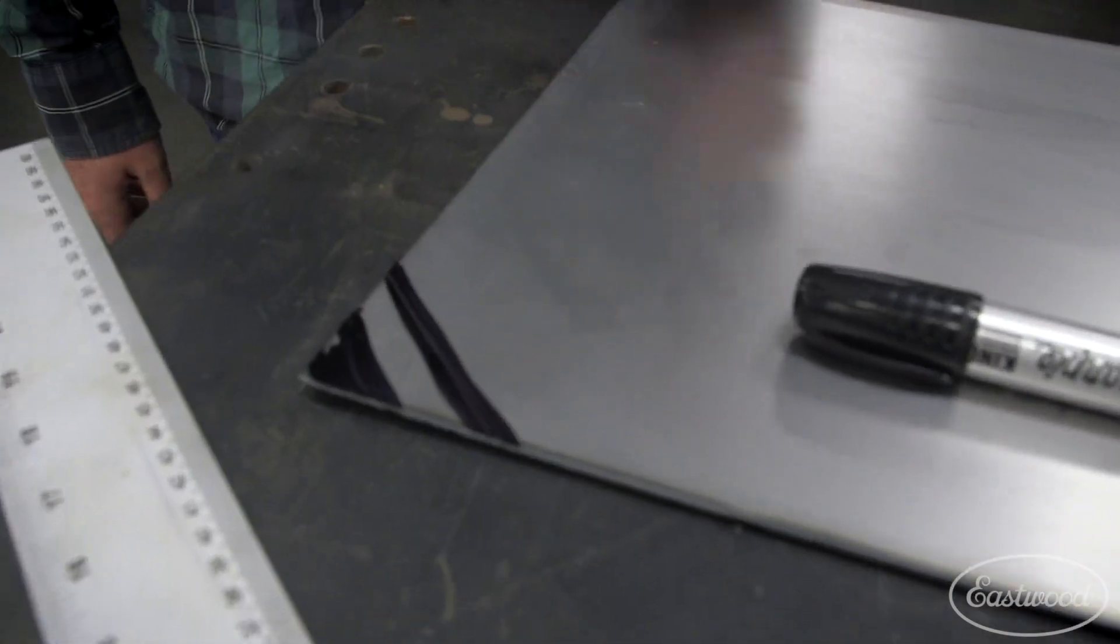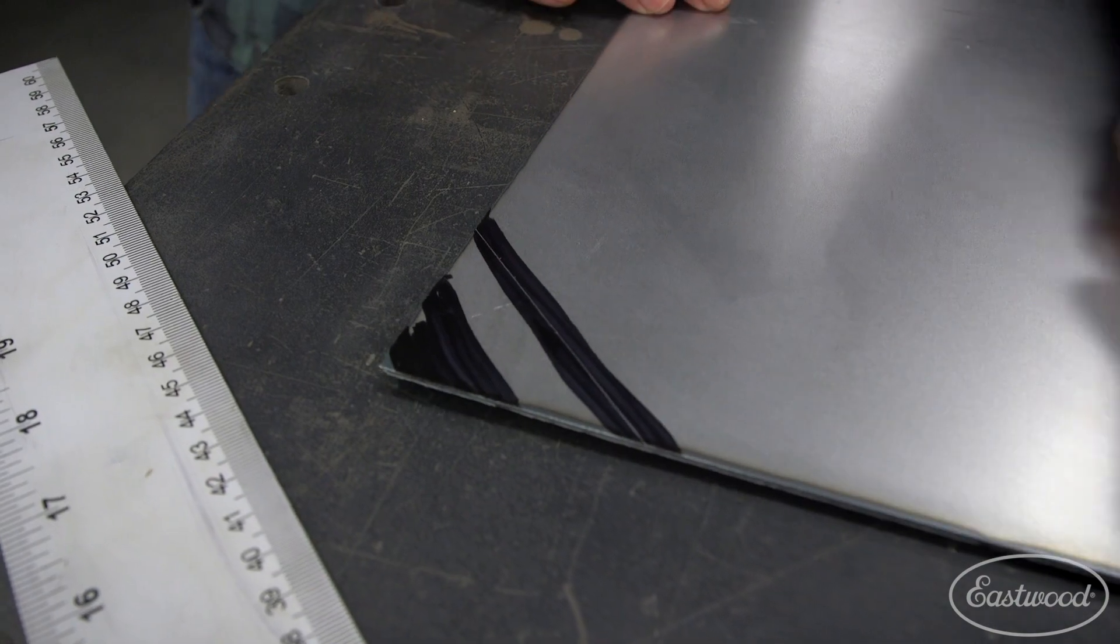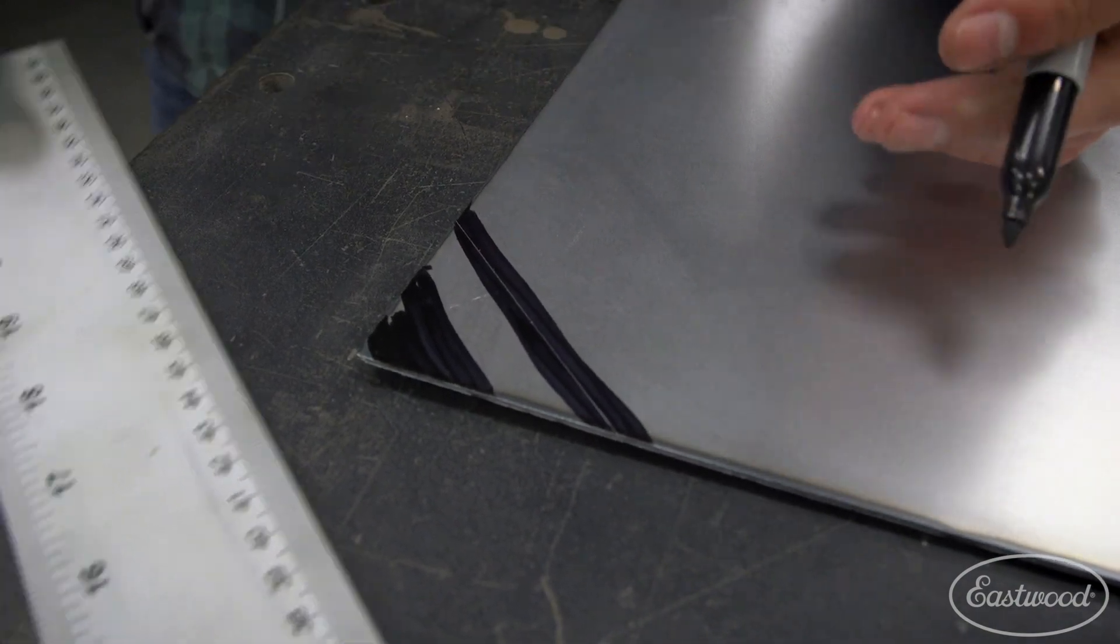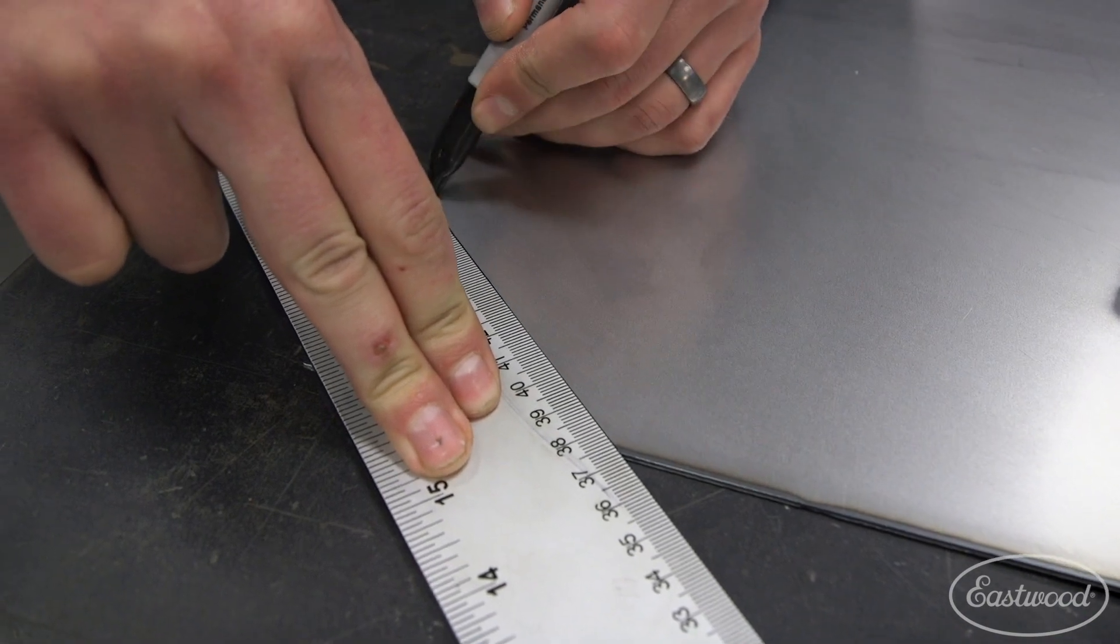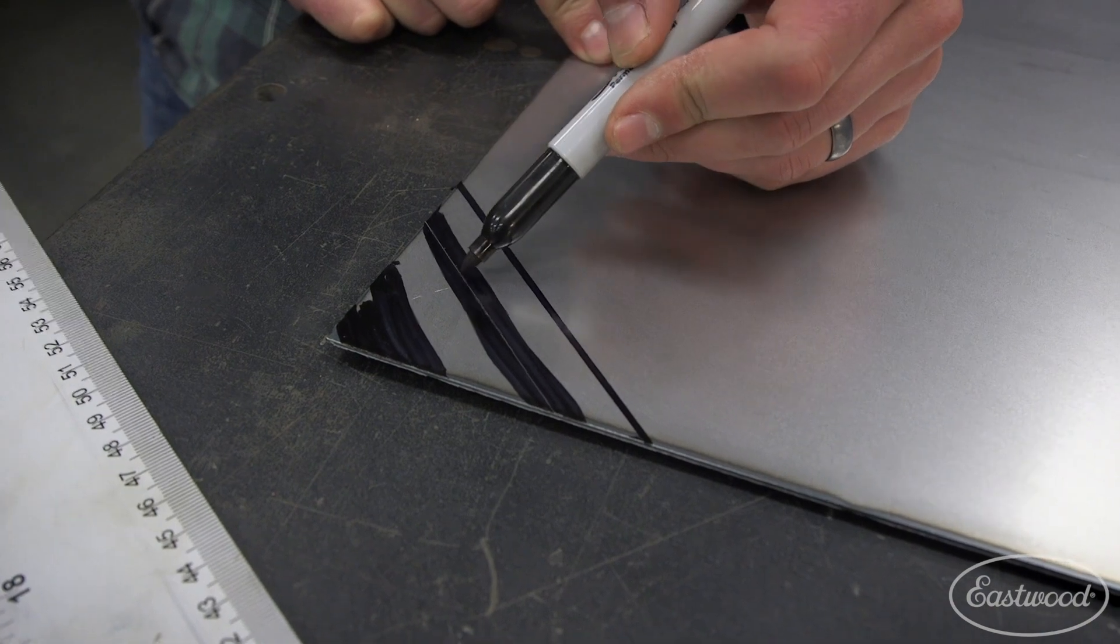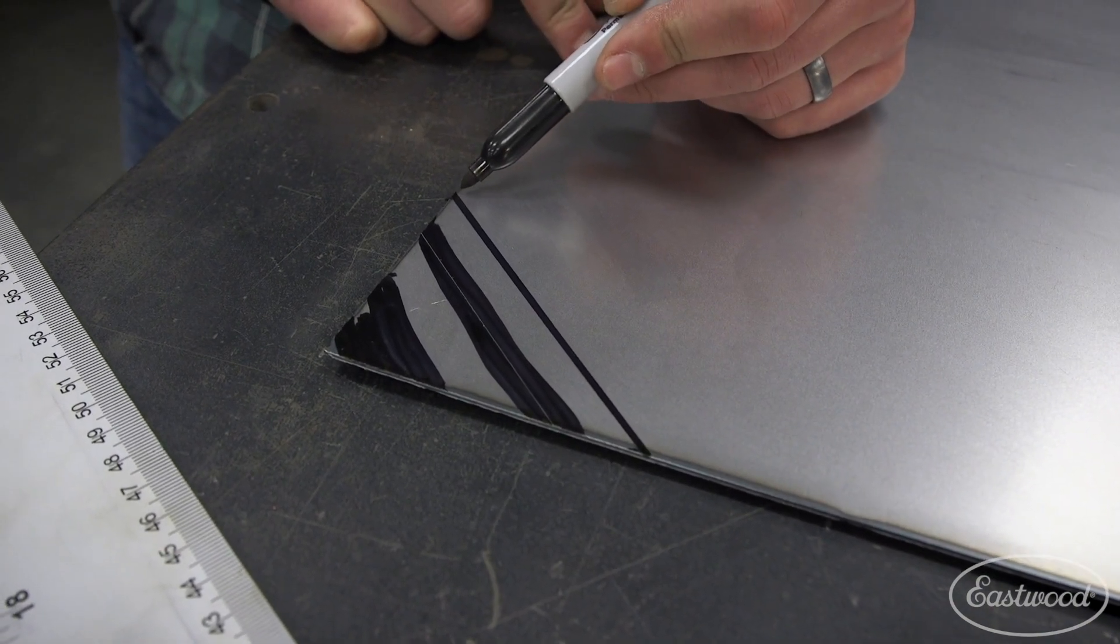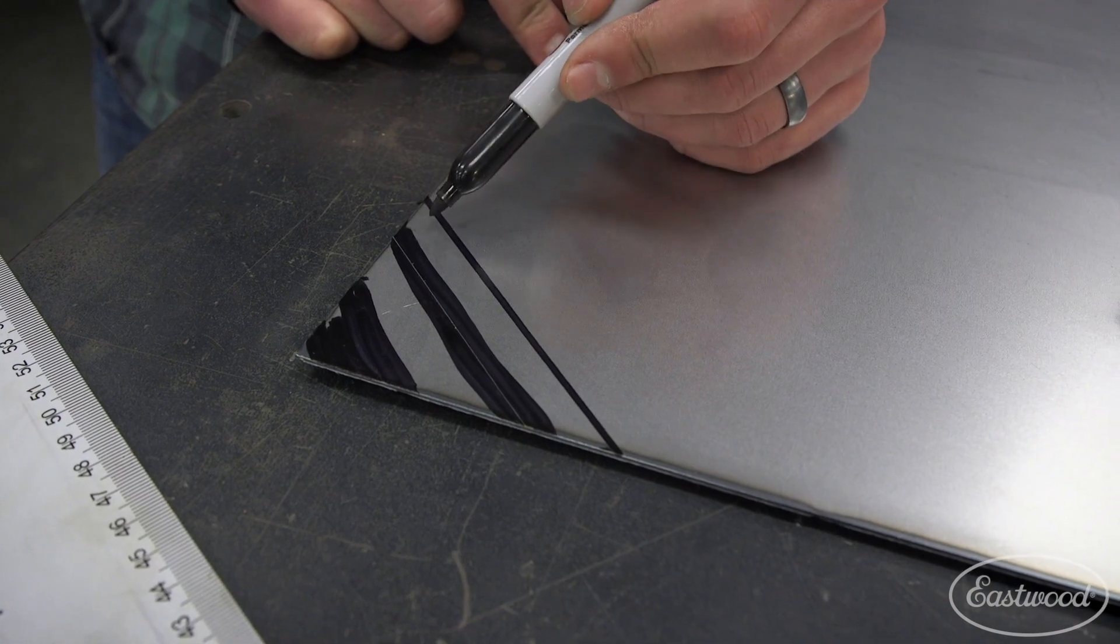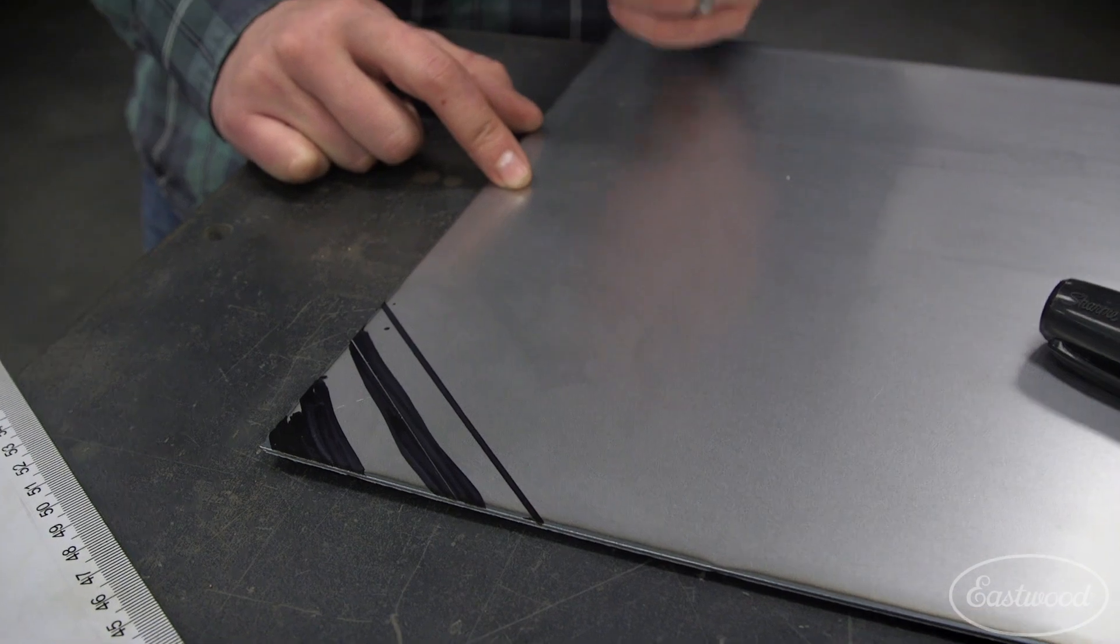We got a good crisp line. Now when you look at that cut line and compare it to if I were to mark it with a Sharpie, look at the amount of variance. I know when I'm riding that edge with my shear, it's going to be dead on. Whereas this Sharpie line, I could float from that edge, that edge, or somewhere in the middle and end up with about a sixteenth of an inch of variation.